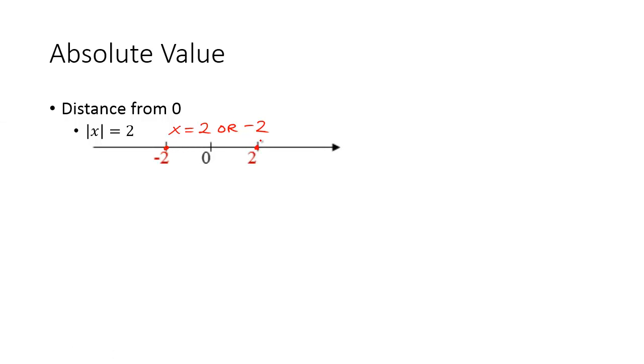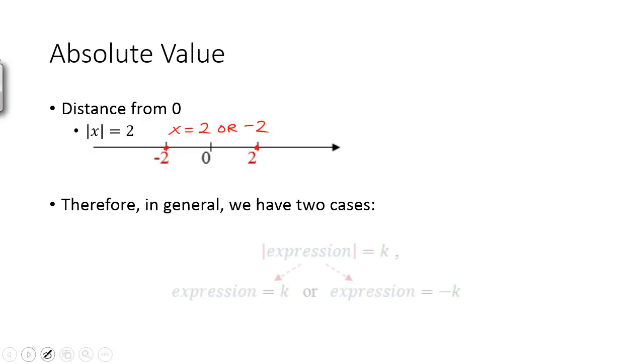So this means we have two results for this one absolute value equation. In general, we have two cases, so when you have an equation with an absolute value equal to k, some number, then you're going to be looking at two cases, either the positive case or the negative case.